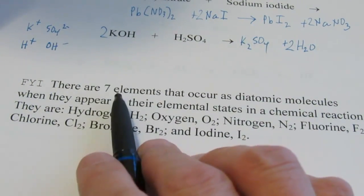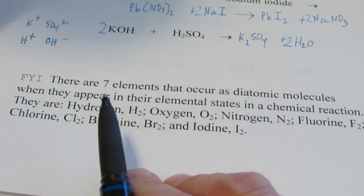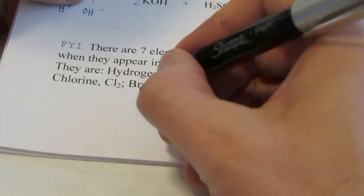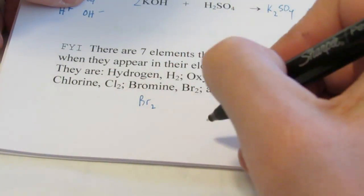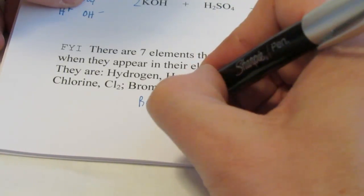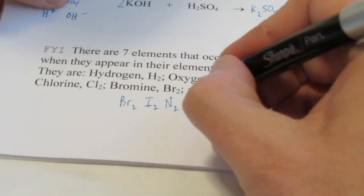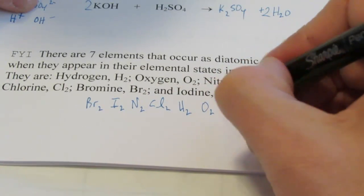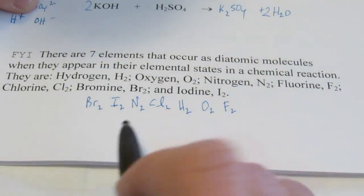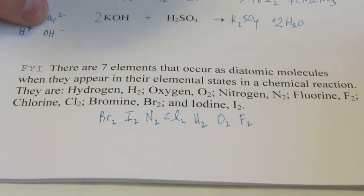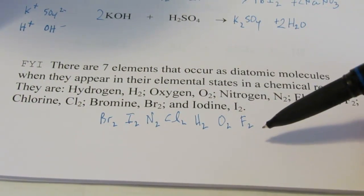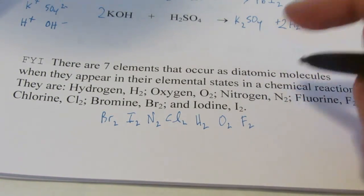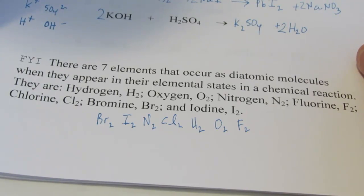Now don't forget, there are 7 elements that occur as diatomic molecules. We call them, I like to call them the Brinkel-Hoff elements. Because they are bromine, iodine, nitrogen, chlorine, hydrogen, oxygen, and fluorine. The Brinkel-Hoff elements. So if they're ever present, they're always with a different element. Or if they're in their elemental state, they come in pairs. So we call them diatomic.